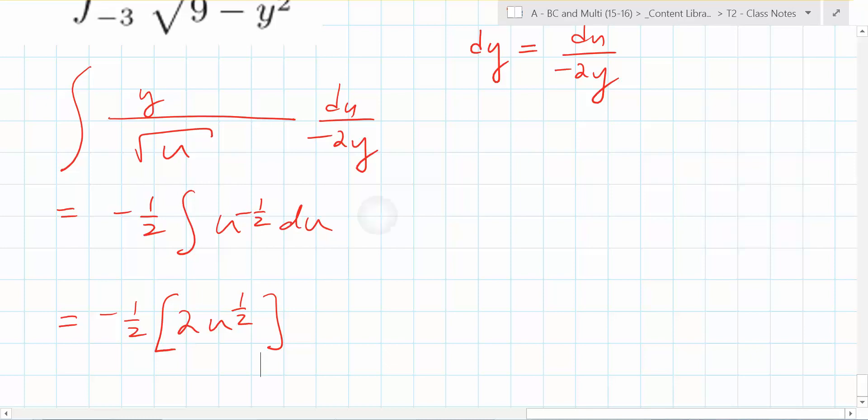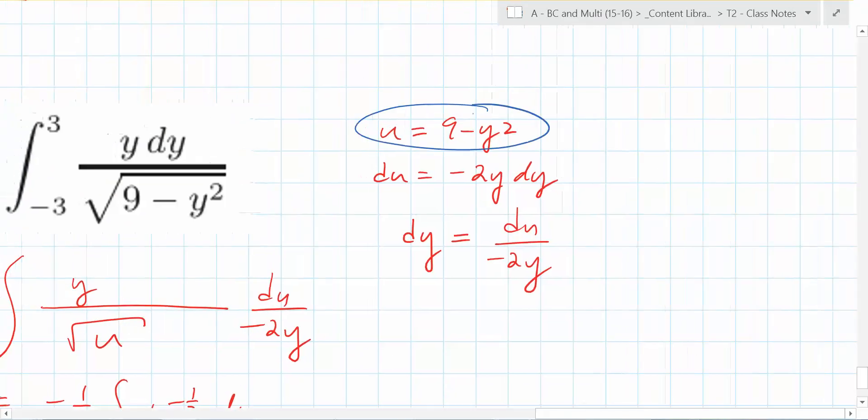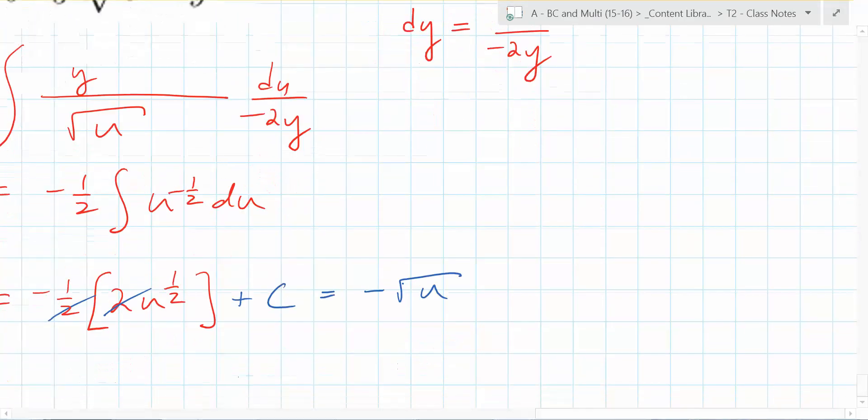So what does this end up equaling? This ends plus what? Plus c. That's great. Equals what? The 2s cancel. What are you left with? Negative square root of what? u. Correct. So what did, but we know u is equal to what? Nine minus y squared. So this tells us that the integral is negative the square root of nine minus y squared.